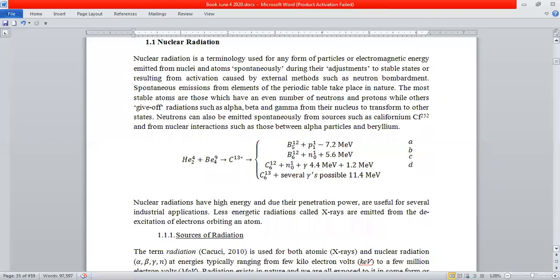Nuclear engineering is all about nuclear radiation. What is nuclear radiation? It's a broad term used for any form of particles or electromagnetic energy which is emitted from nuclei or from atoms, either spontaneously during their adjustments into stable ground states or after activation by us—by bombarding them, for example, by neutrons—and you take them to a state where they start emitting radiation. So you could classify it as spontaneous emission or induced emission.